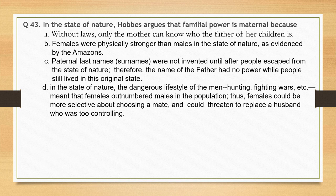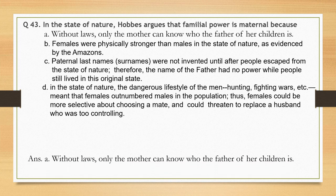In the state of nature, Hobbes argues that familial power is maternal because — options are given. The correct option is option A: without laws, only the mother can know who the father of her children is.